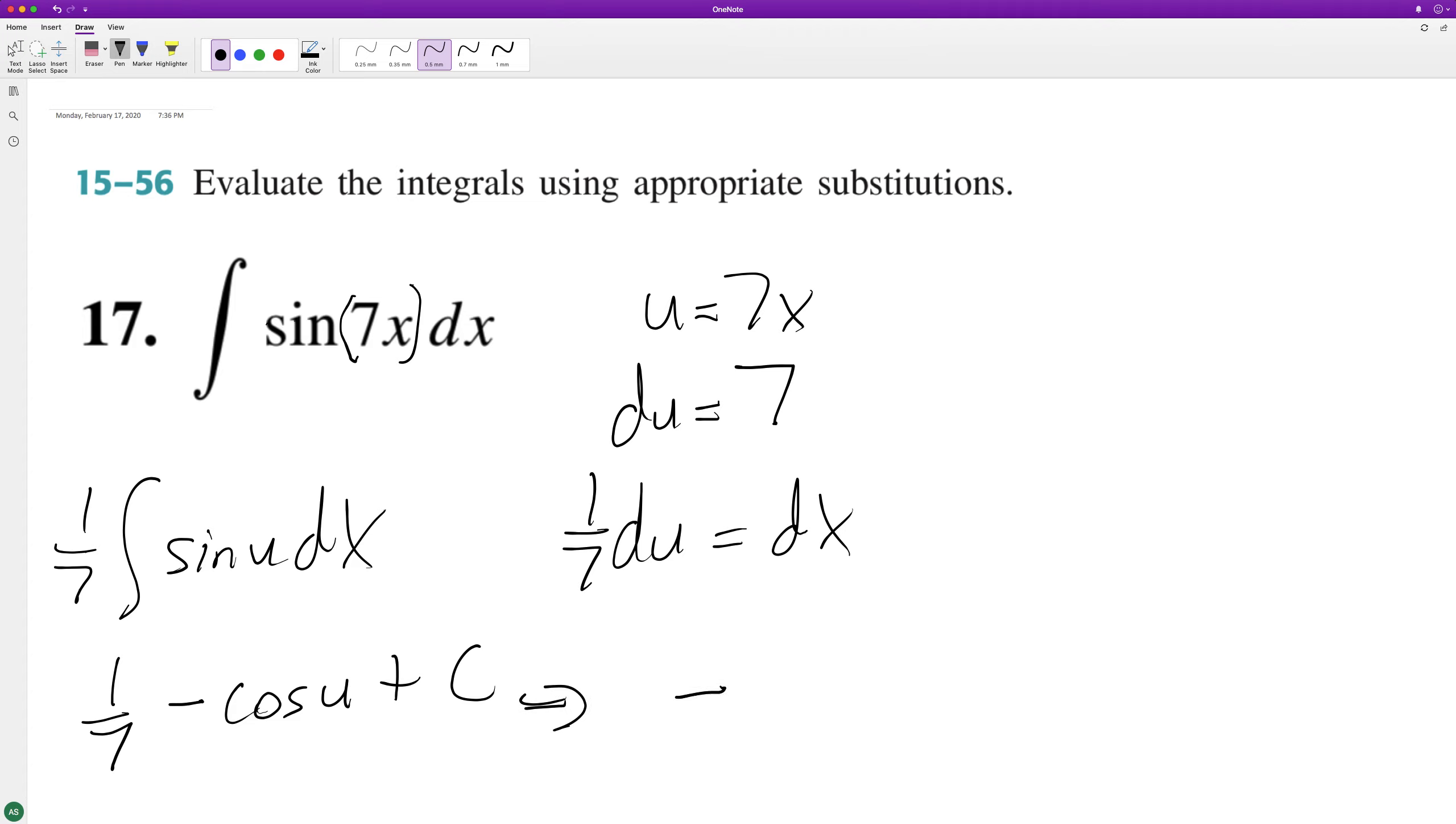If we substitute back and pull out the negative in front, we get negative 1/7 cosine 7x plus C. That's it. I hope this helped you out. I appreciate you watching. Have a great day.